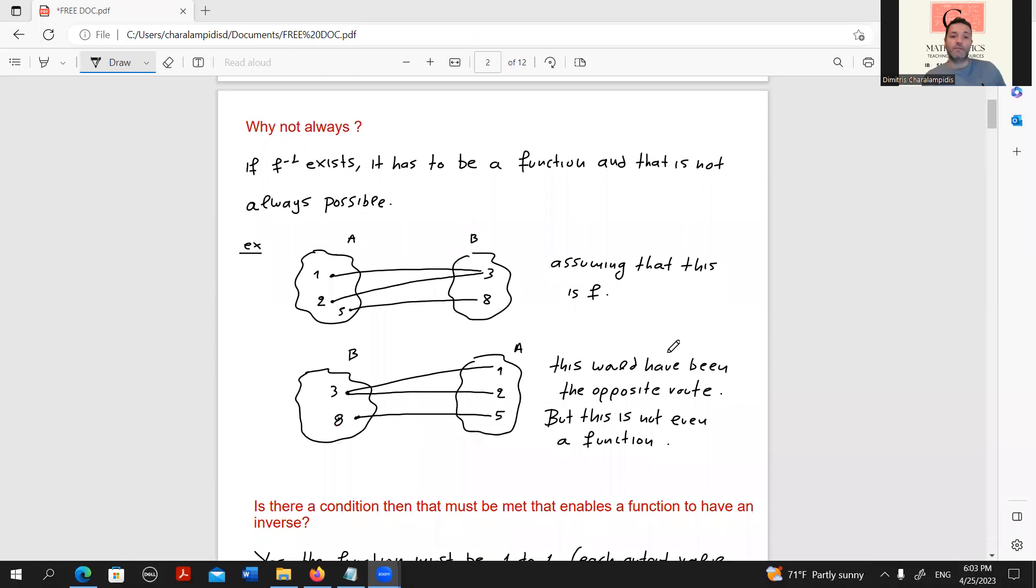I said not always. But why is that? If f^(-1) exists, if the inverse function of f exists, it also has to be a function. And this is not always possible. Let's see a counter example.